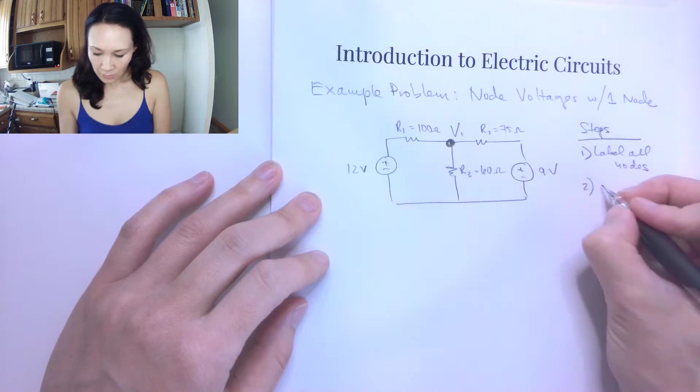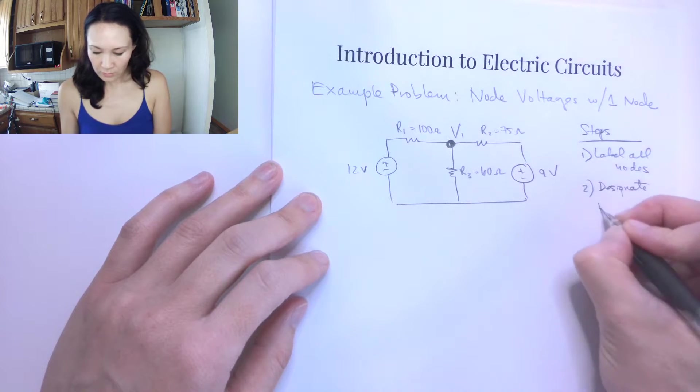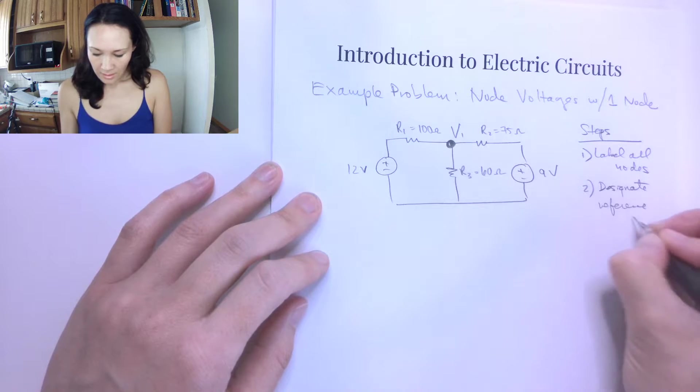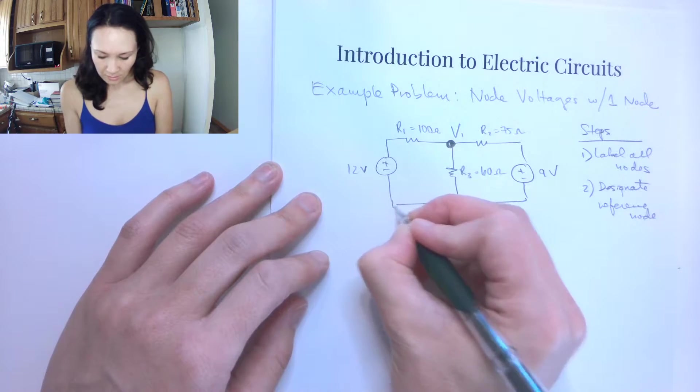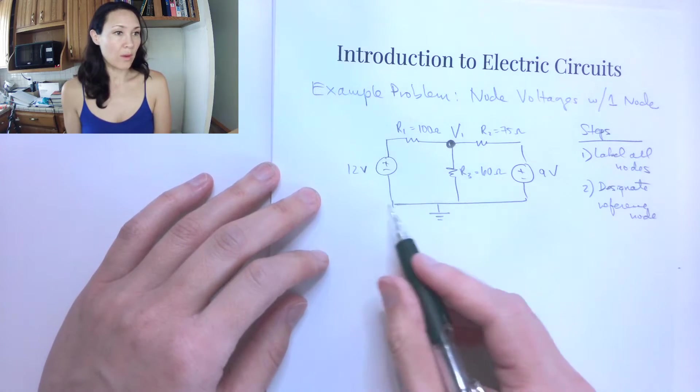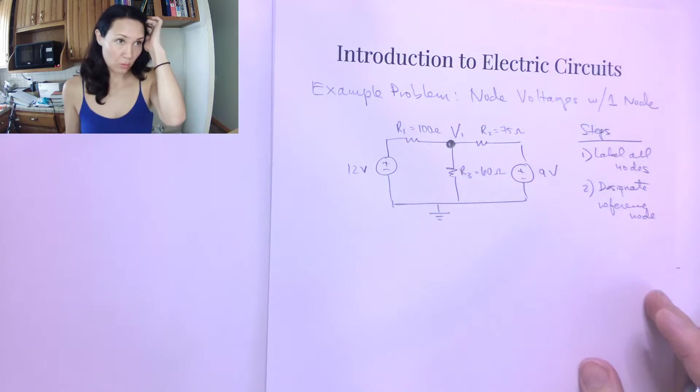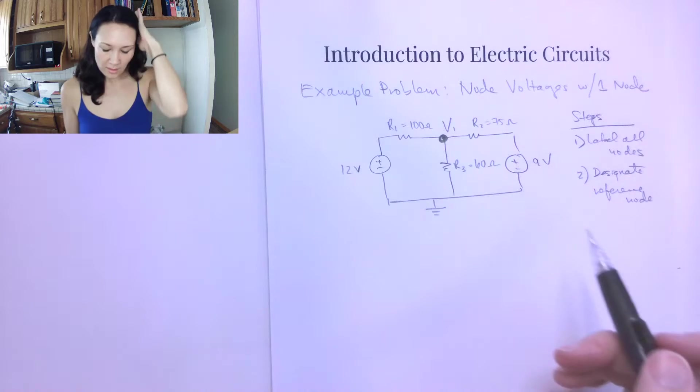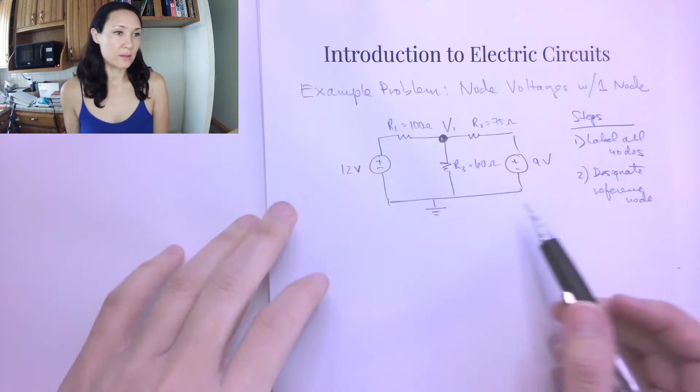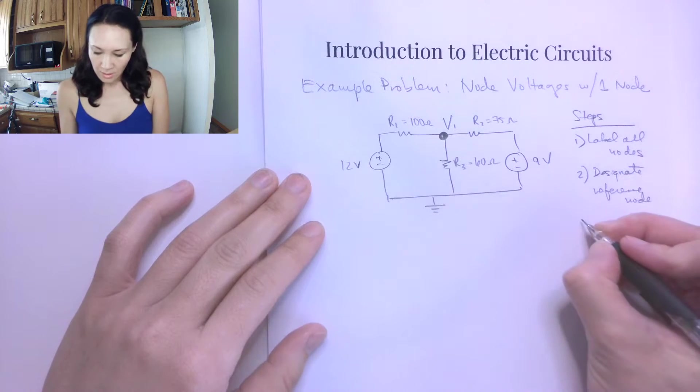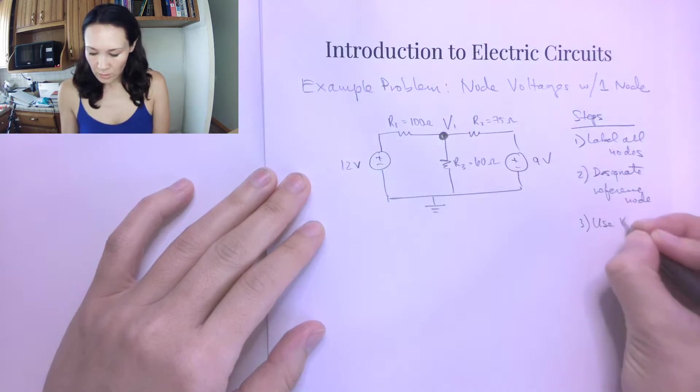The next thing we have to do is designate a reference node. The reference node is almost always ground, but sometimes it's not. We're going to have ground, this bottom wire that's connected to the negative side of our sources, as our reference node. And that way when we subtract our node voltages from it, the value of this is just going to be 0.